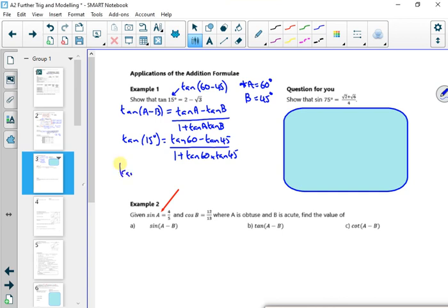Right, so tan 15, tan 60 is root 3, tan 45 is 1, and I've got 1 + root 3 times 1. Now that is going to give me (root 3 - 1) / (1 + root 3). I'm running out of time. If you simplify it up, you'll get the right answer with 2 minus root 3. But I'm running out of time there. So it will work if you do it. But you can follow the marks for it.